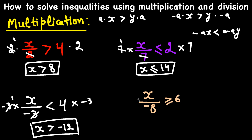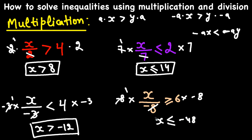In this one, X divided by negative 8 is greater than or equal to 6. Multiplying both sides by negative 8 means we need to change the inequality symbol — greater than or equal changes to less than or equal. Do not forget to do that; a lot of students forget to switch the inequality symbol when multiplying by a negative.